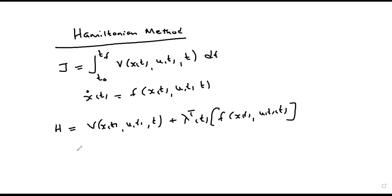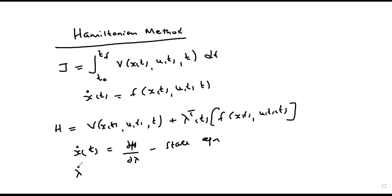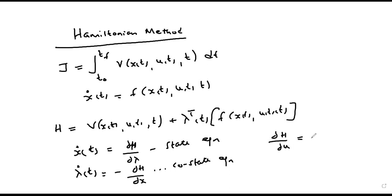The state equation is defined by x-dot(t) equals the partial derivative of H with respect to lambda. The cost-state equation is defined by lambda-dot equals the negative of the partial derivative of H with respect to x. Lastly, the control equation is defined by the partial derivative of H with respect to u equals zero.